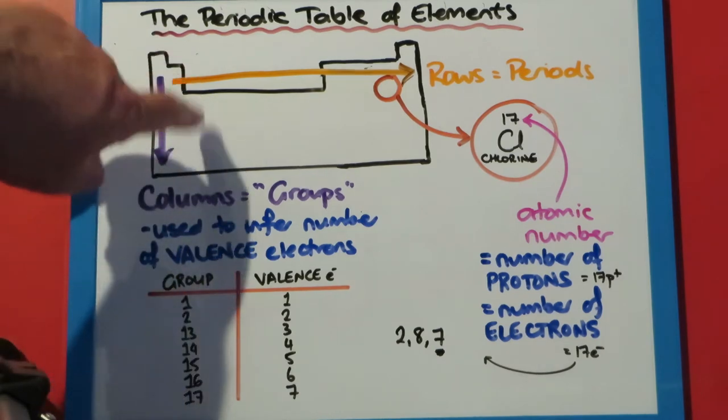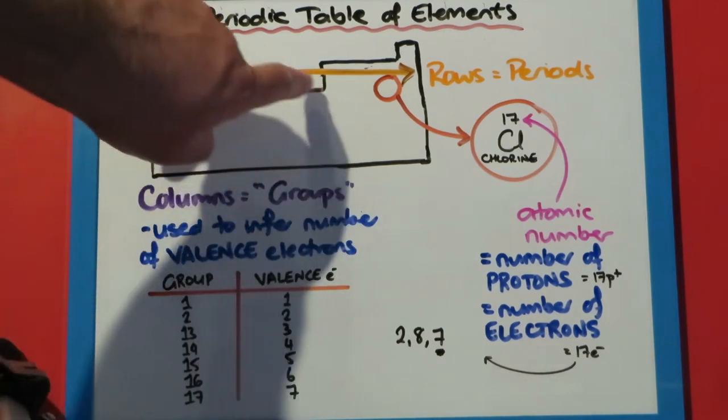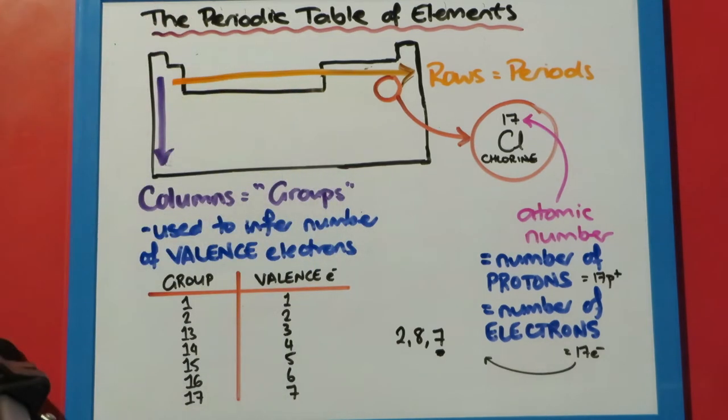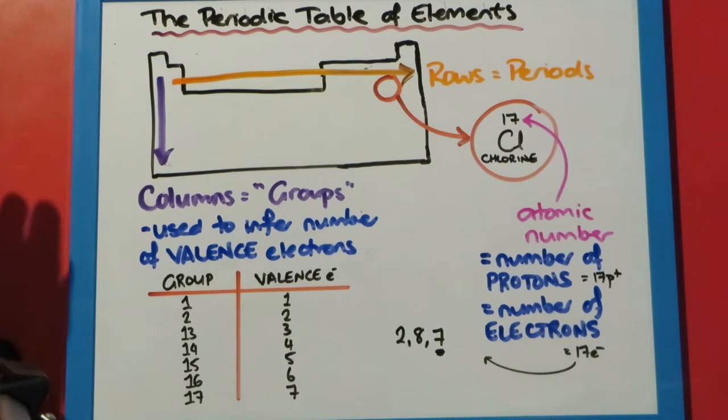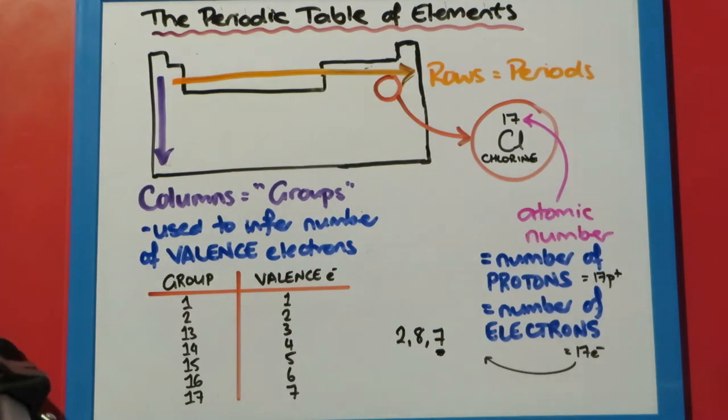Group 1, group 2, group 3, and so on. We ignore the 10 in the middle at year 12 level. The electron configurations of those are a bit more complex and we learn about those more in year 13.